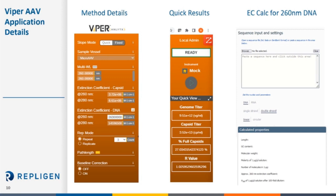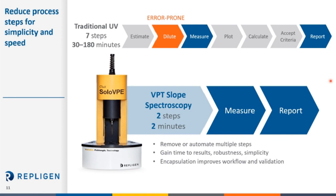The middle graph represents the genome titer concentration, capsid concentration, percent full, and the R value — the ratio of these wavelengths — which effectively becomes your OD value for which all the math is calculated. We also have a sequence input tool for determining extinction coefficients using a DNA sequence, integrated directly into the software to make method development easier. To summarize, we've taken traditional UV from a seven-step operation down to a two-step operation of measure and report, removing or automating multiple steps to gain time to results, ensure robustness and simplicity, and improve workflow and ease of validation for slope spectroscopy methods.